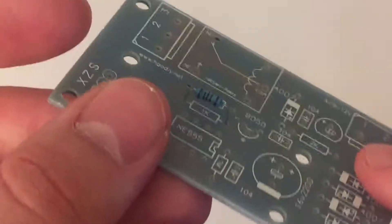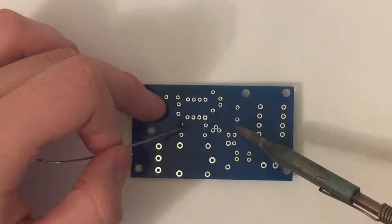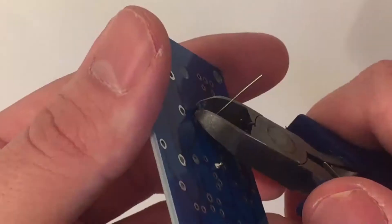Insert the resistors and solder them in place. Don't forget to shorten the legs after you're done.